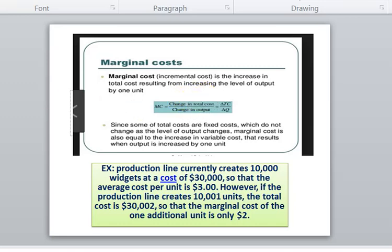Let's look at the slide show. Marginal Cost is also called Incremental Cost. Incremental Cost is the increase in total cost resulting from increasing the level of output by one unit. Marginal Cost equals change in total cost divided by change in output. Since some total costs are fixed, which do not change as the level of output changes, Marginal Cost also equals the increase in variable cost that results when output is increased by one unit.